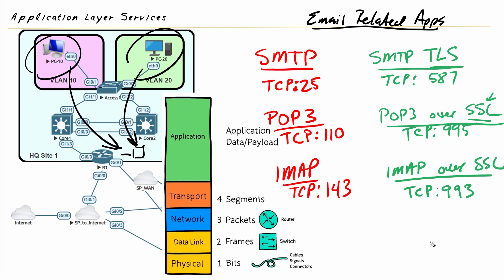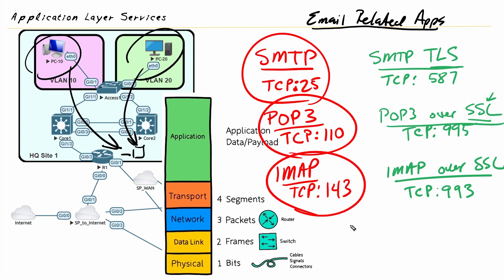It's good to be aware of the default ports for email-related application layer services. On the left are the insecure application layer services with their default ports; on the right are the secure flavors. Another benefit of knowing these ports is that when looking at log files, even without a next-generation firewall, you can check whether insecure protocols like SMTP on TCP 25, POP3 on TCP 110, or IMAP on TCP 143 are being used — and if so, replace them with their secure counterparts.